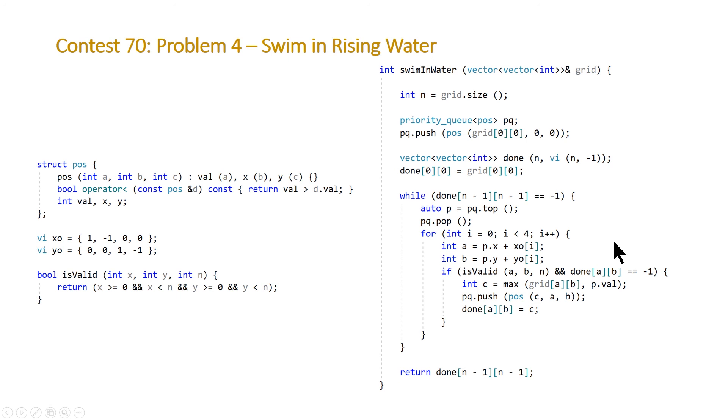If it's a valid element, meaning it's not outside the grid and it hasn't been processed before, we're going to come inside here. We're going to make sure that we are storing the value of that element to be the maximum of the previous value and the actual elevation given to us in the grid. Once we've done that, we're going to push this into our priority queue so that we will process it when it needs to be done.